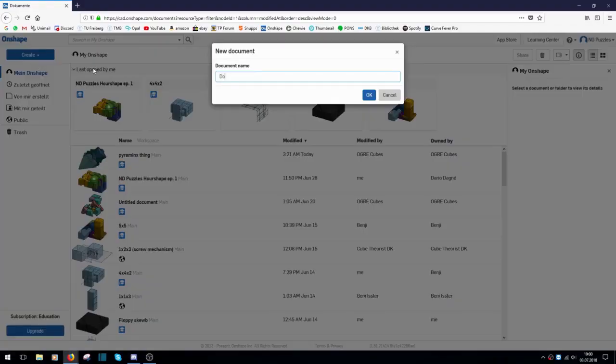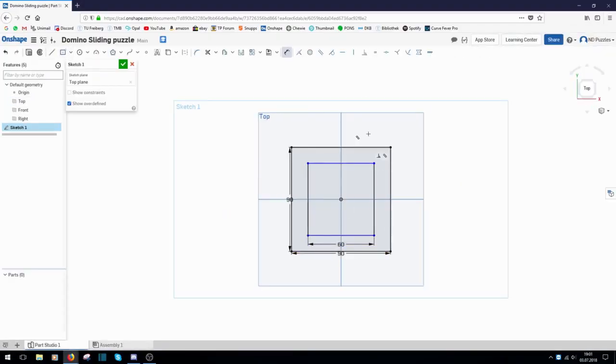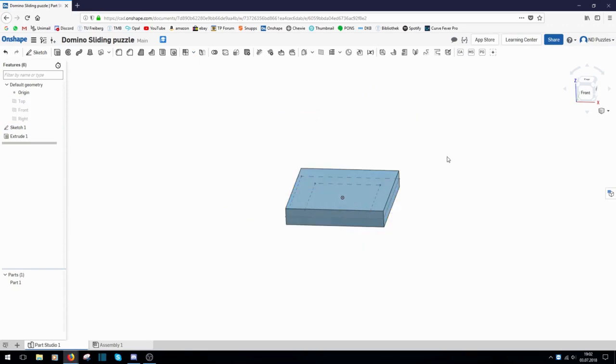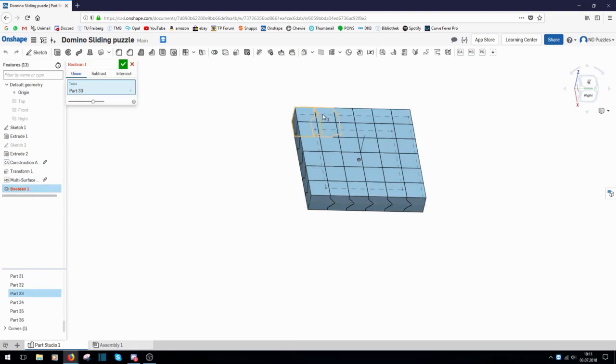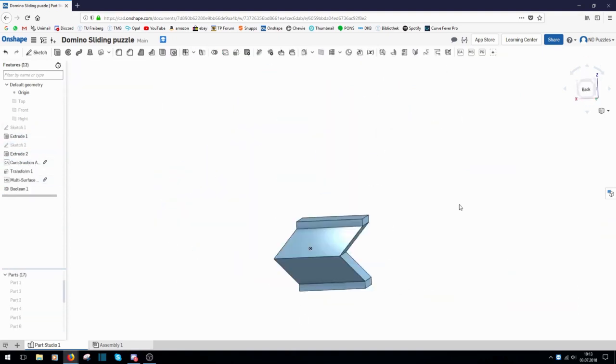Then I went on with the design in Onshape. That turned out to be easier than I had thought. Starting with a non-bandaged 4x4 grid, I designed the pieces using just one cutting surface that I duplicated using a linear pattern.